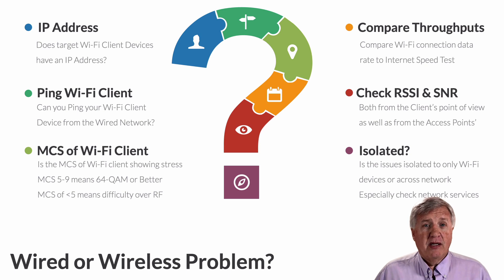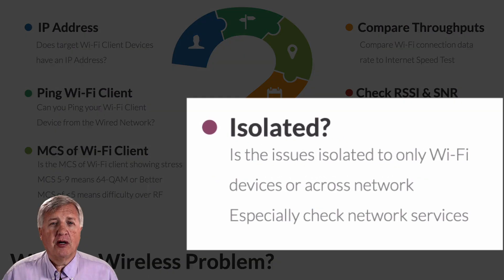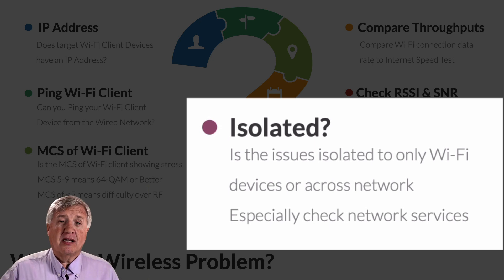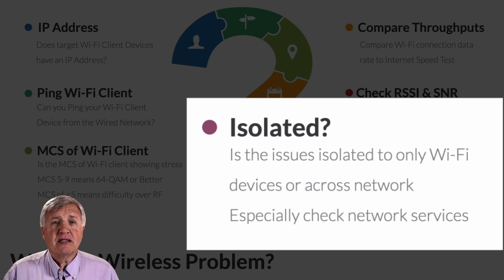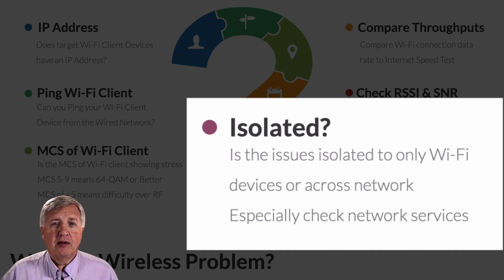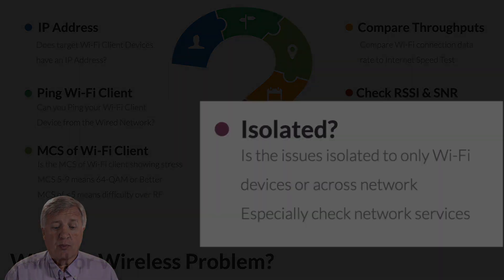The last item is more of a question: is the problem you're looking at isolated? Is it an individual client? Is it all the wireless clients? Is it the clients who are on wireless on one side of the building? Ask some penetrating questions to find out exactly where the problem is, and it'll help you figure out whether it's a wired or wireless problem.